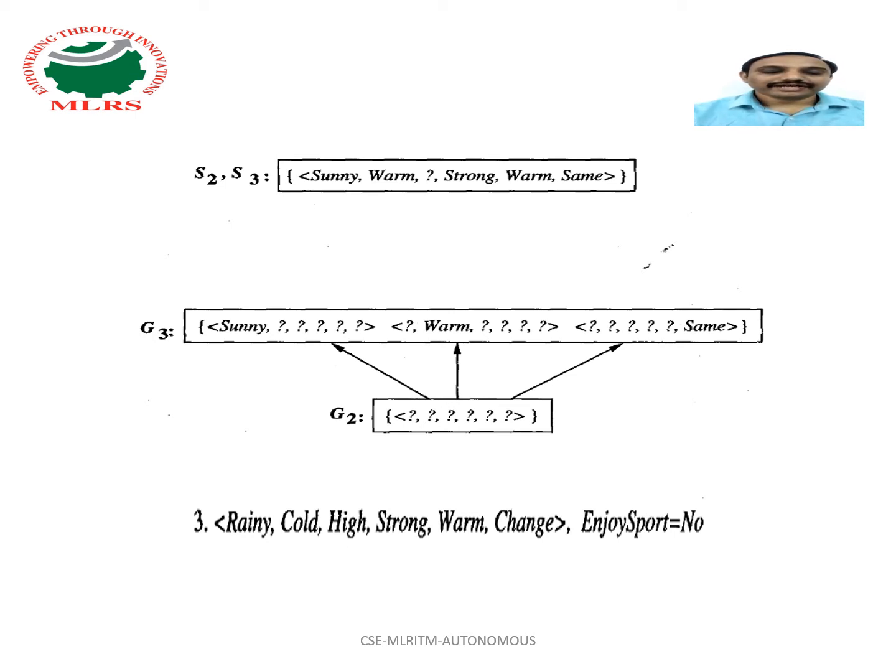For example, the hypothesis H with question mark, question mark, normal, question mark, question mark, question mark is a minimal specification of G2 that correctly labels the new example as negative, but it is not included in G3.